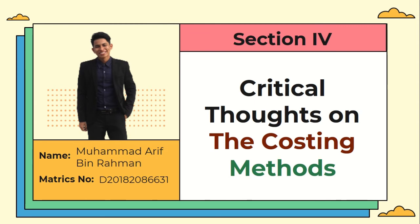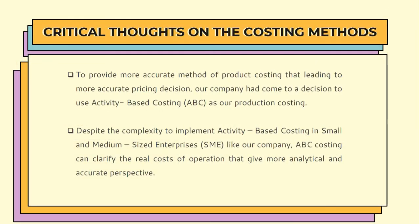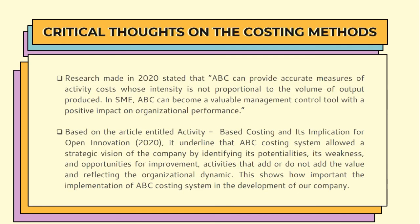My name is Muhammad Ali Rahman and I will be presenting the last part of the project-based assignment, which is the critical thought on the costing method. To provide a more accurate method of product costing leading to more accurate pricing decisions, our company decided to use ABC costing, which is activity-based costing, as our production costing. Despite the complexity of implementing ABC costing in small and medium-sized enterprises like our company, ABC costing can clarify the real cost of operations, giving a more analytical and accurate perspective. Research made in 2020 stated that ABC can provide accurate measures of activity cost whose intensity is not proportional to the volume of output produced.